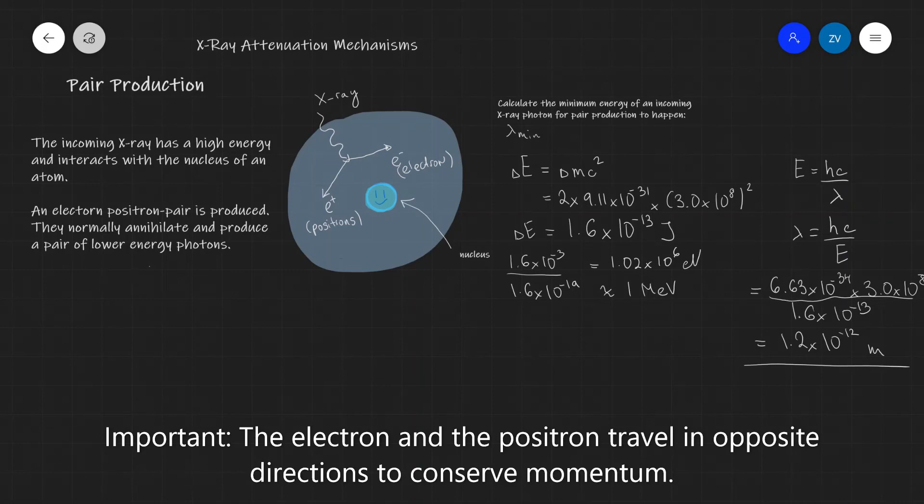There are two particles which are being produced from the X-ray, an electron and a positron traveling in opposite directions because momentum has to be conserved. It is a vector quantity, so initially this horizontal momentum over here was zero because the particle was just traveling towards the nucleus, so it has to be zero in this direction after the event as well, which is why they're traveling in opposite directions.